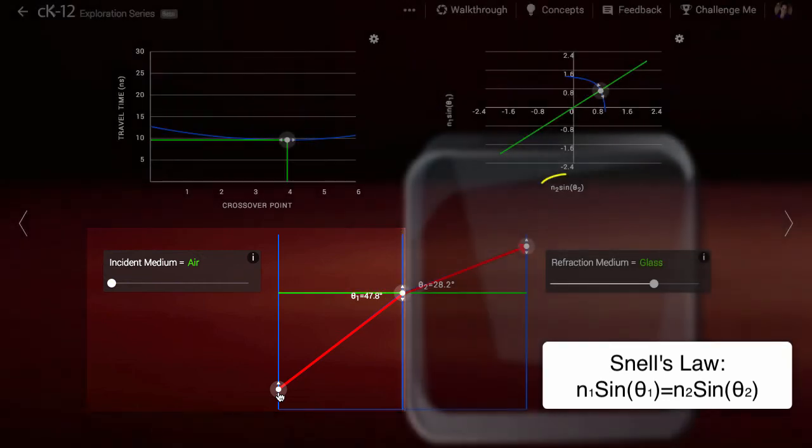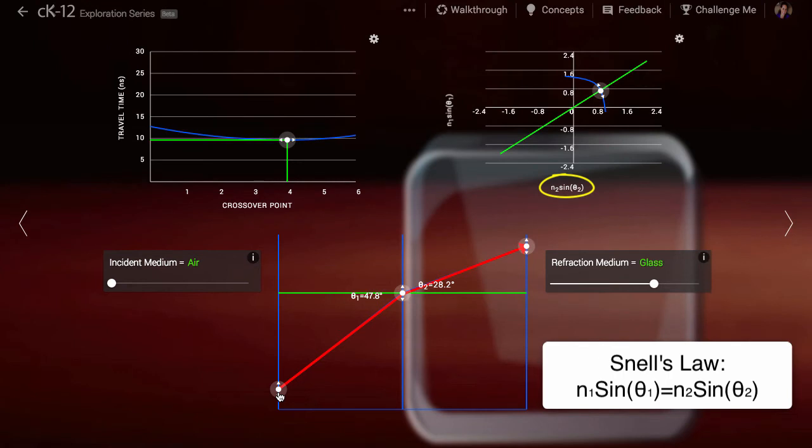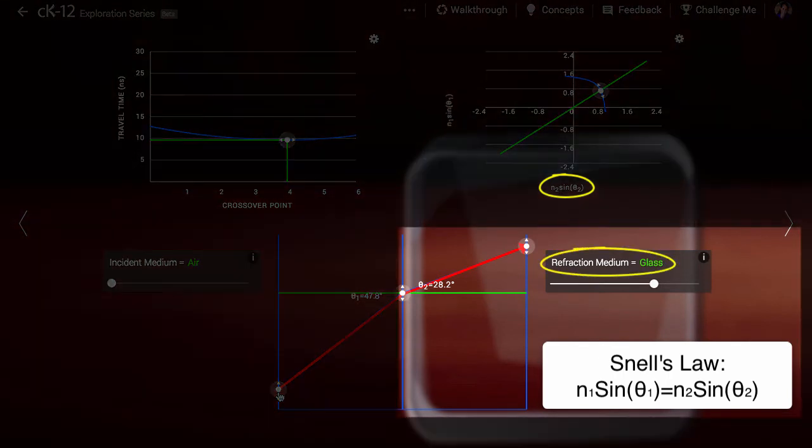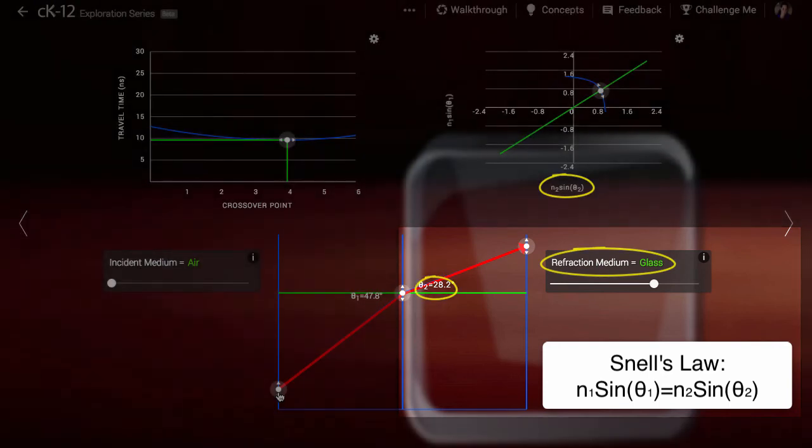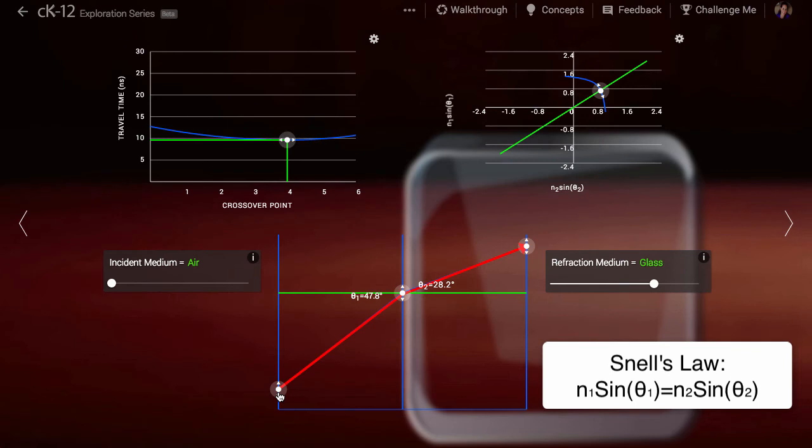Likewise, the horizontal axis represents the index of refraction n of the material to the right of the interface, this time times the sine of the refracted angle. As you might have noticed, when you manipulate the point on the interface where the light ray bends, you can see our position on this right hand graph change. The moment of least time happens when the vertical axis and the horizontal axis on this graph equal each other.